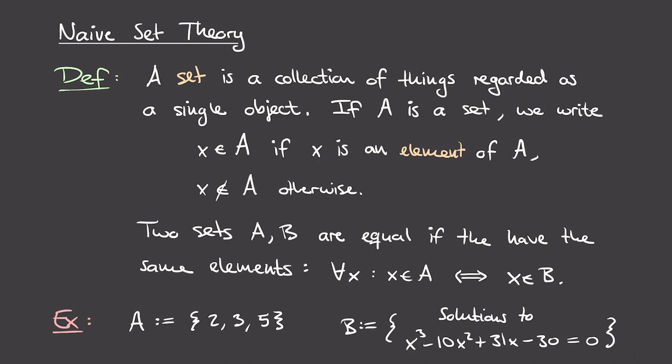Let's see some examples. The first example defines the set A, which contains three elements: 2, 3, and 5. We usually enclose the elements in curly brackets. On the other hand, we have set B, which consists of all solutions to the polynomial equation x³ - 10x² + 31x - 30 = 0. It turns out that sets A and B are in fact the same, because the solutions to this equation are precisely the numbers 2, 3, and 5. Despite being described in very different manners, they are the same set because they have exactly the same elements.